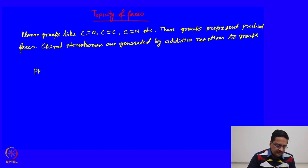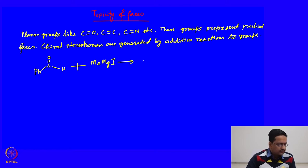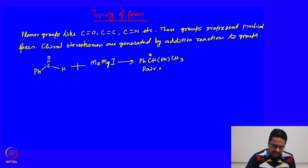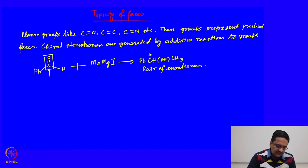For example, if we have PhCHO and we add methyl magnesium iodide and then do the corresponding hydrolysis, we get PhCH(OH)CH₃ and we generate a chiral centre in this molecule as a pair of enantiomers. Therefore, we call this a prochiral face.